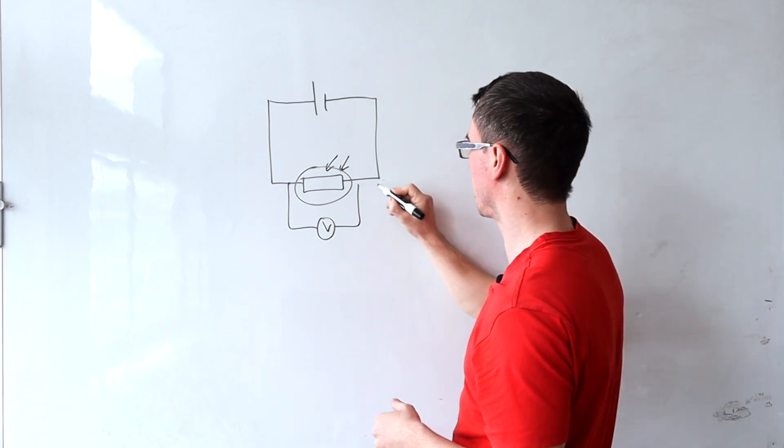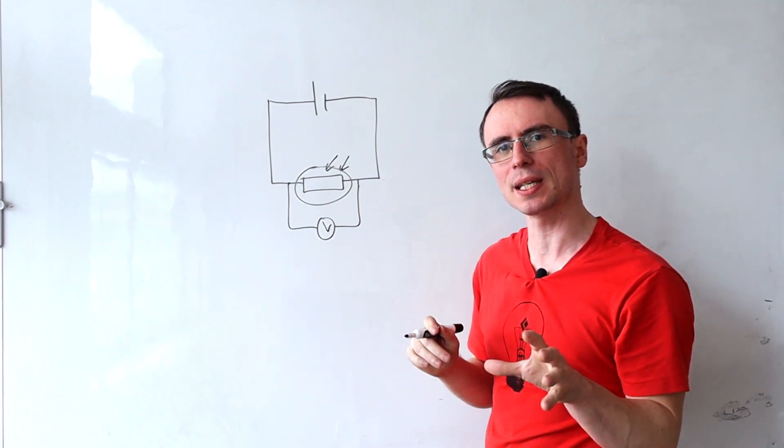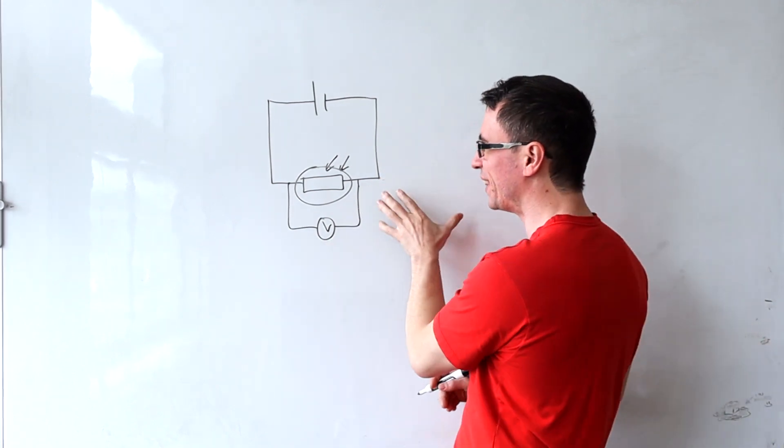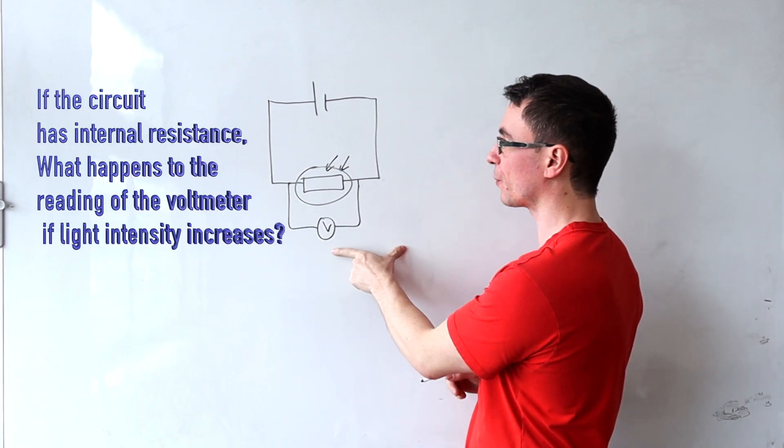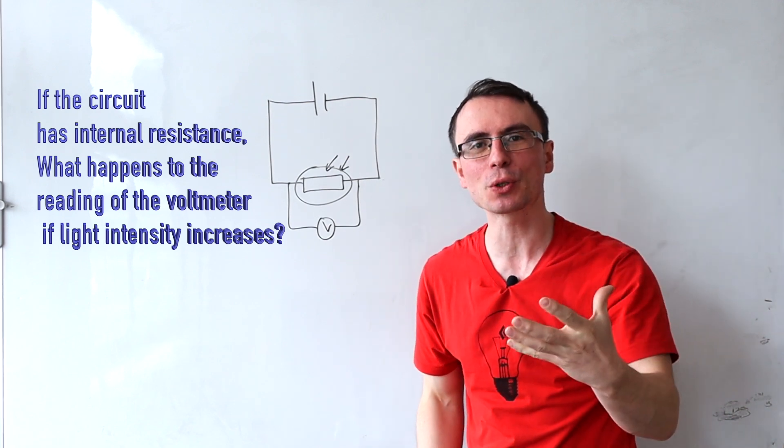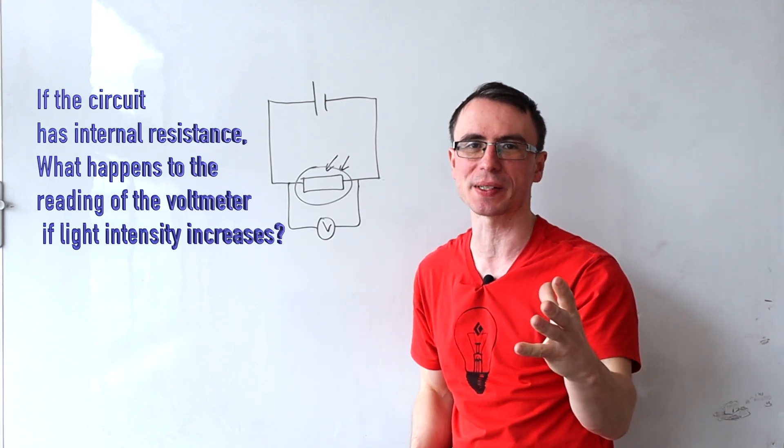It can also be across the power supply - essentially it's the terminal PD. Now my question is: if this circuit has internal resistance, what happens to the reading of the voltmeter if we were to increase the light intensity?